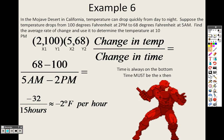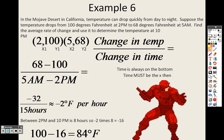So -32 divided by 15 means it's going down roughly 2 degrees Fahrenheit per hour. From 2 p.m. to 5 a.m. it drops about 2 degrees every hour. Between 2 p.m. and 10 p.m. is 8 hours, so -2 times 8 is -16, meaning it goes down 16 degrees. So 100 minus 16 means by 10 p.m. it would be 84 degrees outside.